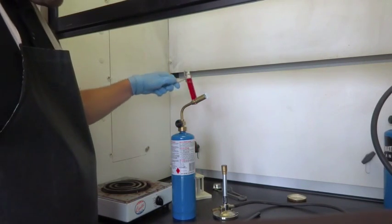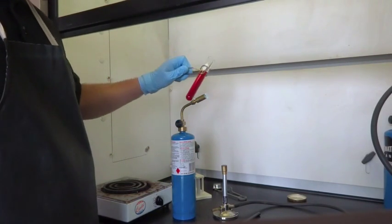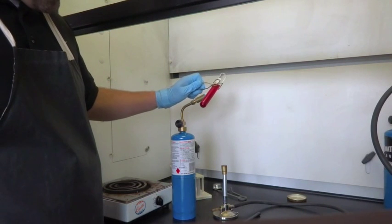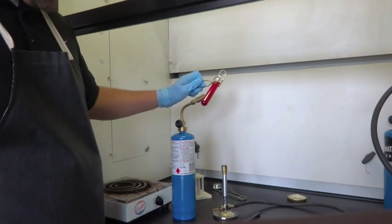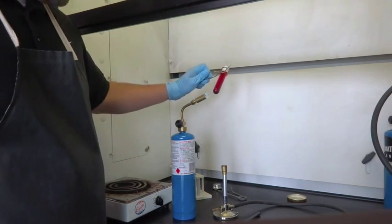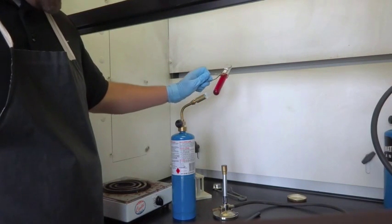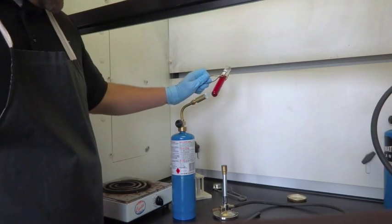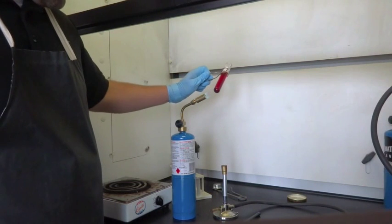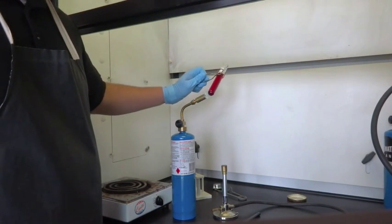When heating chemicals, always heat with the opening facing away from you or anyone else. Also, run the test tube up and down the flame so as to heat it equally and not in just one place. This makes it less likely to boil over.